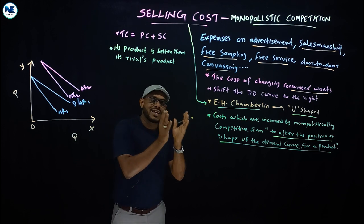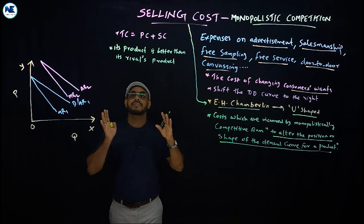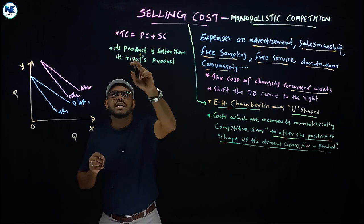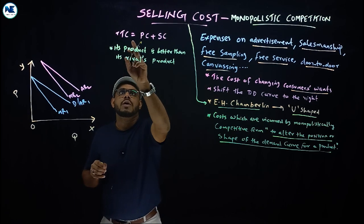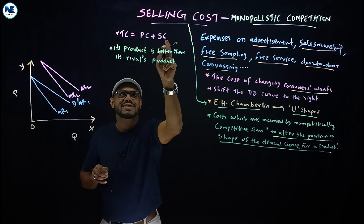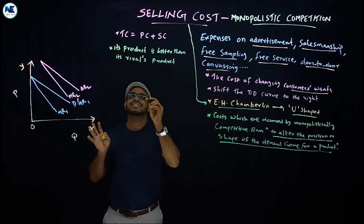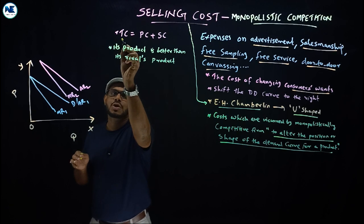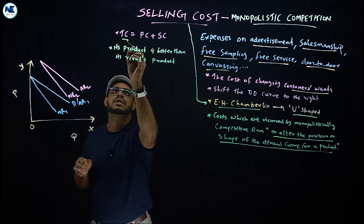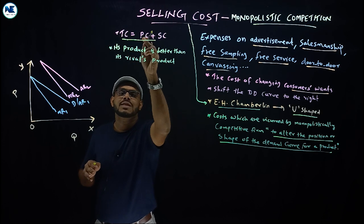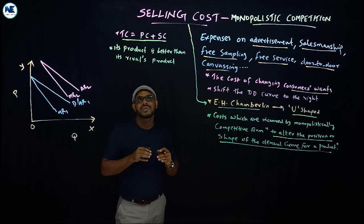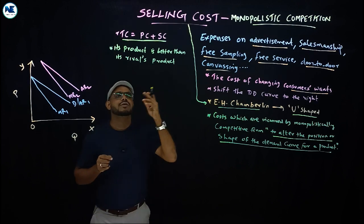Selling cost and monopolistic competition are very integral. Total cost under monopolistic competition is equal to production cost plus selling cost. Selling cost is the sum of production cost and selling cost.